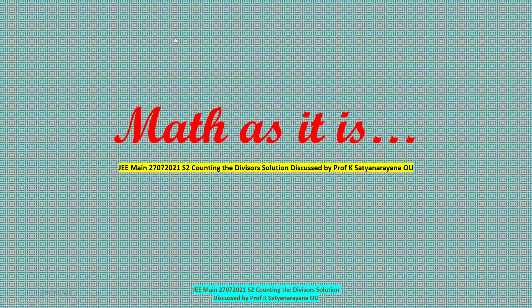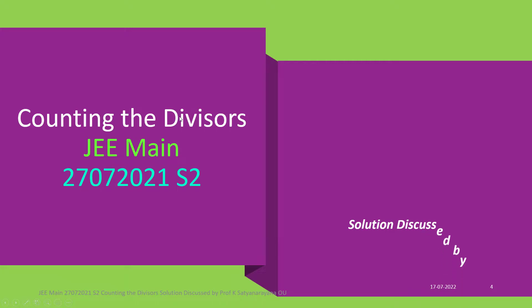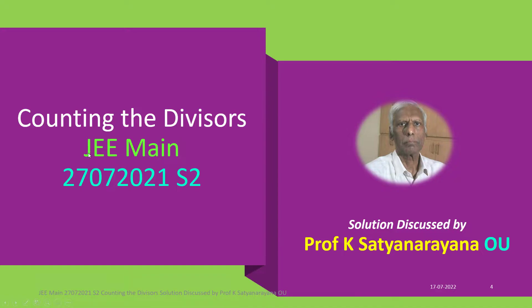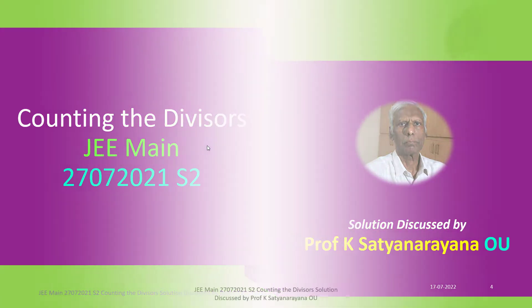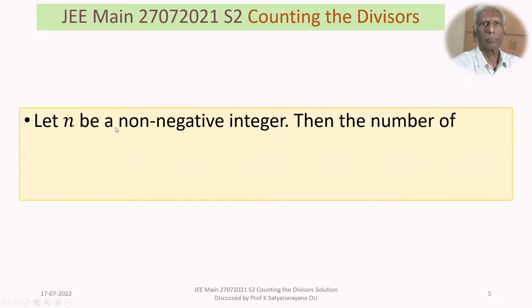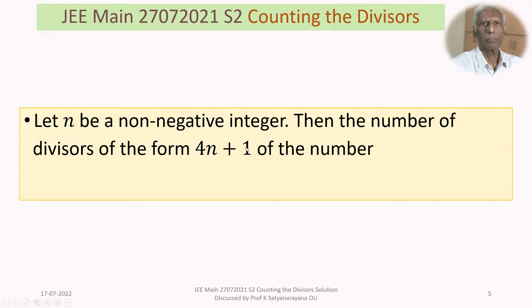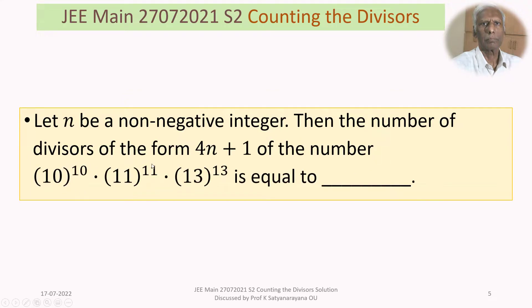We now discuss the solution of a problem on counting the number of divisors of a given number. This problem appeared in the Joint Entrance Examination Main held on 27th July 2021 in the second shift. The problem is: let N be a non-negative integer. Then find the number of divisors of the form 4N+1 of the number 10^10 × 11^11 × 13^13.